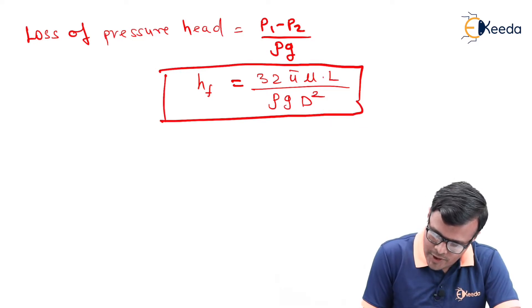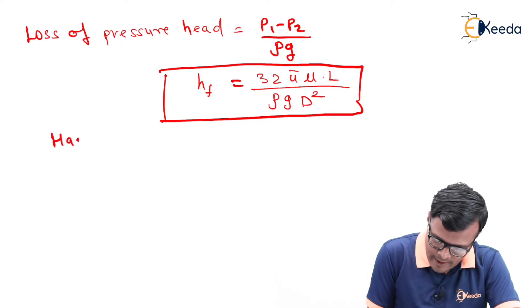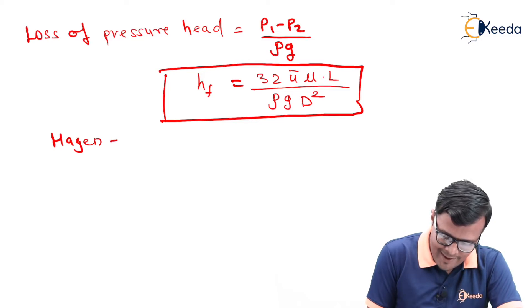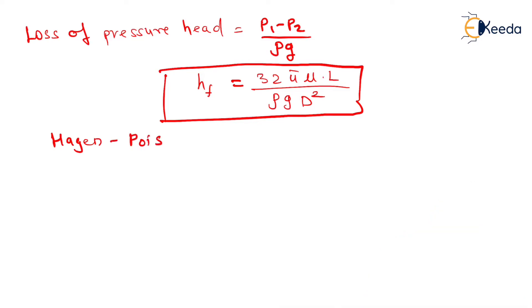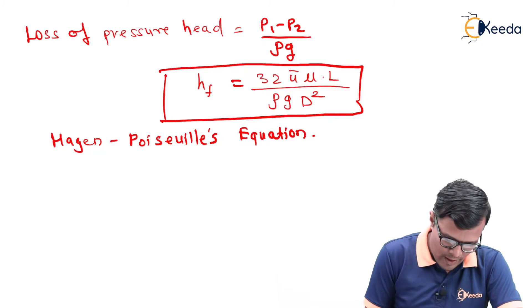This relation was given by the scientist Hagen-Poiseuille equation. Hagen-Poiseuille equation.